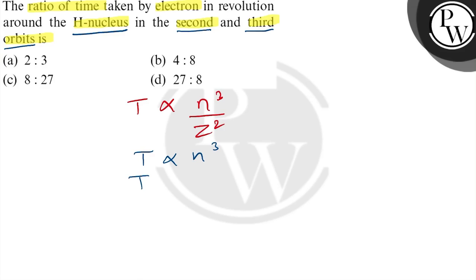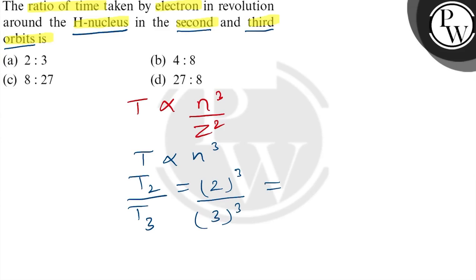So we can write that T2, the time of revolution for the 2nd orbit, upon T3, the time of revolution for the 3rd orbit, is equal to n2 cubed upon n3 cubed. So n2 is 2, giving 2 cubed upon 3 cubed, which comes out to be 8 upon 27. So option C, 8 is to 27, is the correct answer.